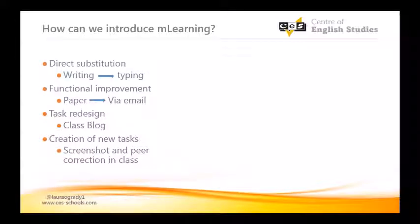So what we do is direct substitution — we change the writing task and get students to type: send the email versus write the email. Then we move on to a functional improvement: we've changed from paper to email, and everyone can share it. Then we move on to a task redesign — instead of just correcting the email and handing it back, we continue developing that resource and can change it into a class blog, so everyone can have peer feedback and access to the information and knowledge.